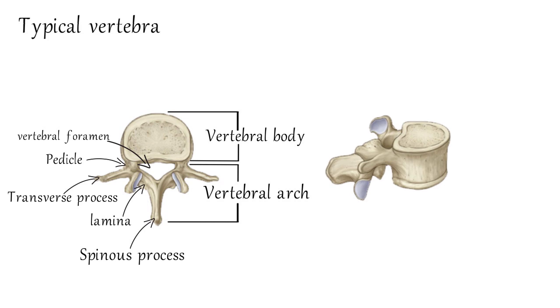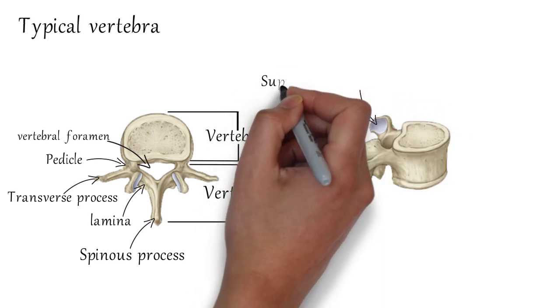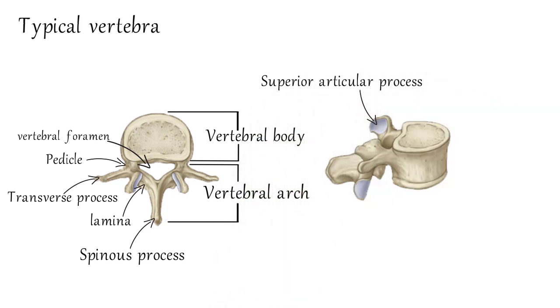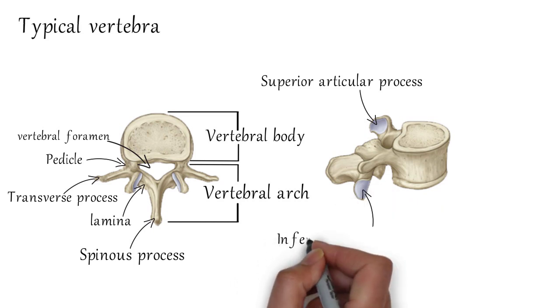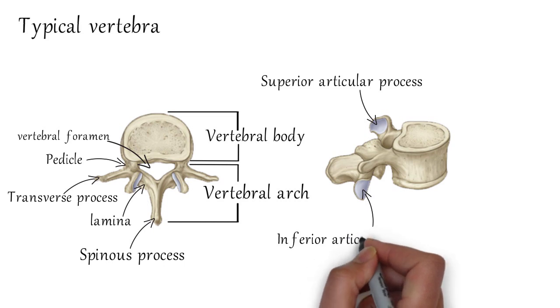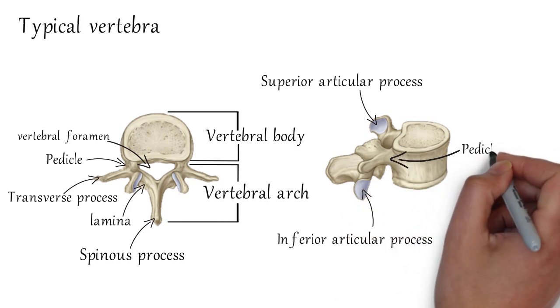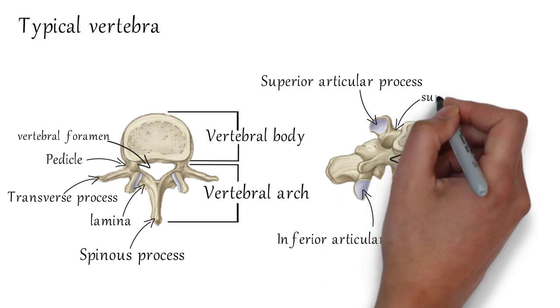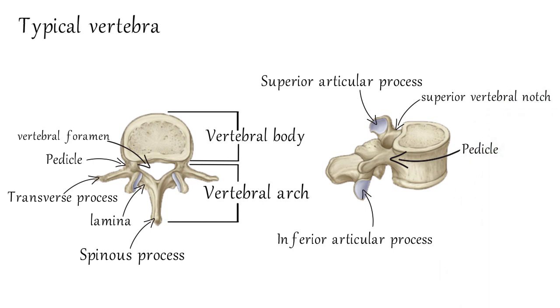Now let's see the lateral view. The region where the pedicle joins the lamina are the superior and inferior articular processes. Each pedicle is notched on its superior and inferior surfaces that form superior and inferior vertebral notches, which participate in forming the intervertebral foramen.